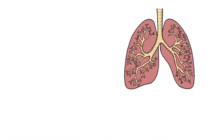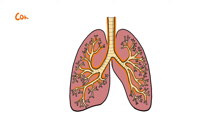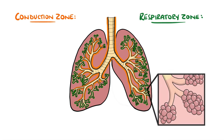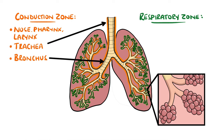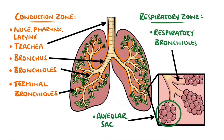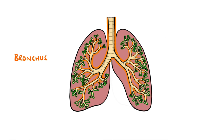The conduction zone of the airways, which extends from the nose to the bronchioles, is where air is warmed and moistened before getting to the respiratory zone, where gases are exchanged at the alveoli. In asthma, it is the conducting zone that is mostly affected, in particular the bronchi and bronchioles.